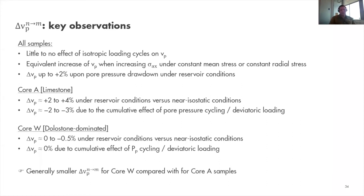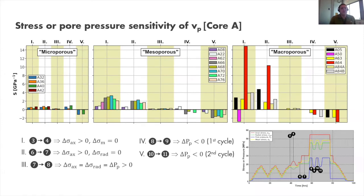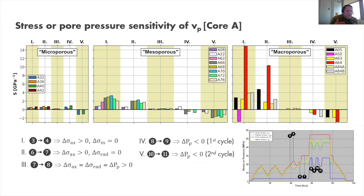Core A samples showed up to 4 percent increase of Vp under reservoir stress conditions versus near-isostatic conditions, whereas this was nearly negligible for dolomite-dominated samples. There is also generally smaller delta Vp for Core W compared with Core A. Turning to stress or pore pressure sensitivity: the S-value (derivative of Vp against axial stress or pore pressure) is plotted for sections of the testing protocol, with panels subdivided for micropore, mesopore, and macropore samples.